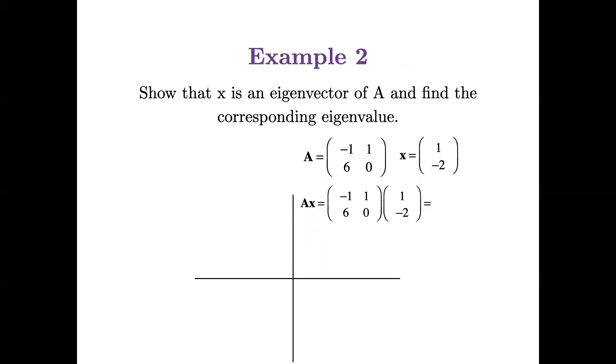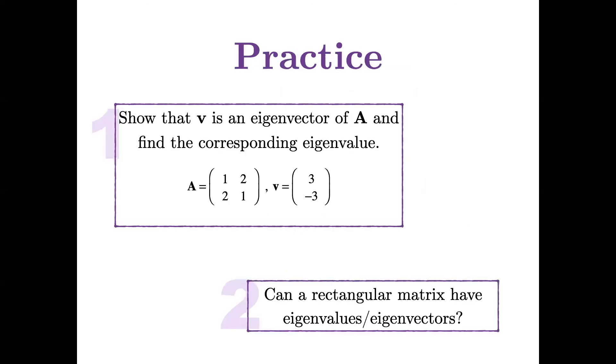So here's another example. Show that x is an eigenvector of A and find the corresponding eigenvalue. Well, what we need to do is simply multiply A times x, find the result, and determine what scalar multiple this result is of what we started with. And the answer would be, of course, negative three. Now we can draw these. There's x and now Ax goes in the opposite direction, three times the length of x. Let's get some practice here just to make sure that the concepts are syncing in.